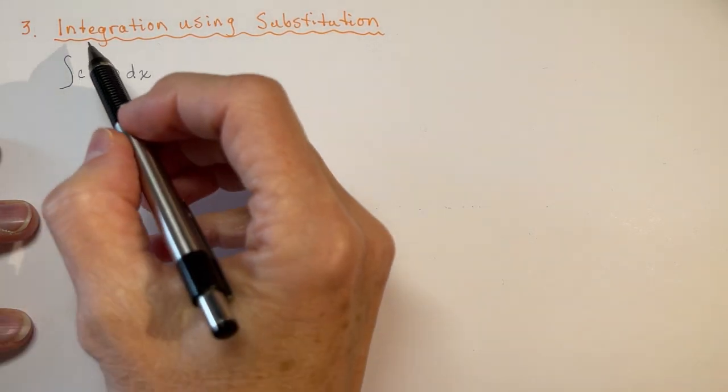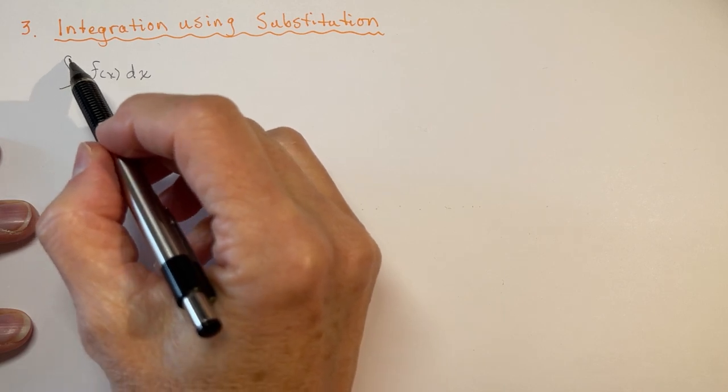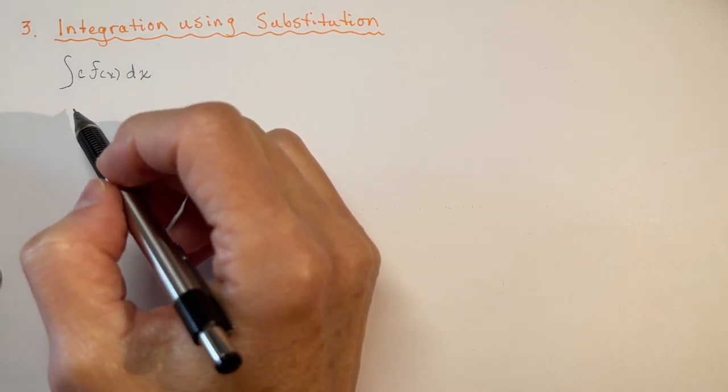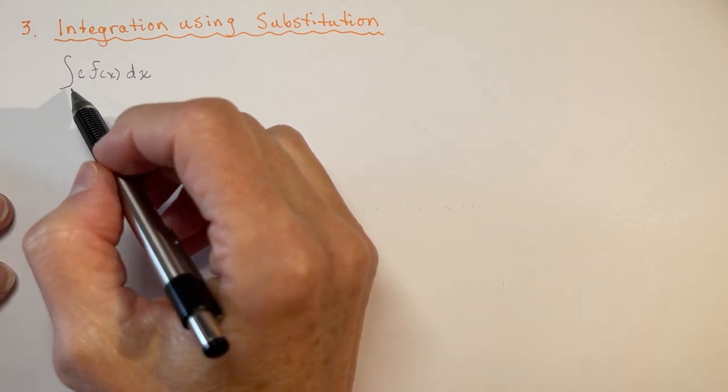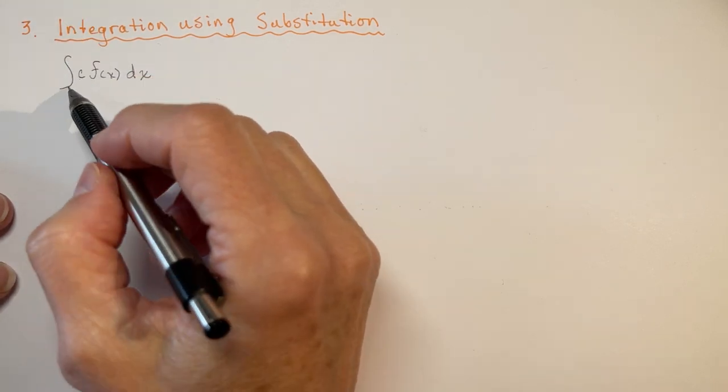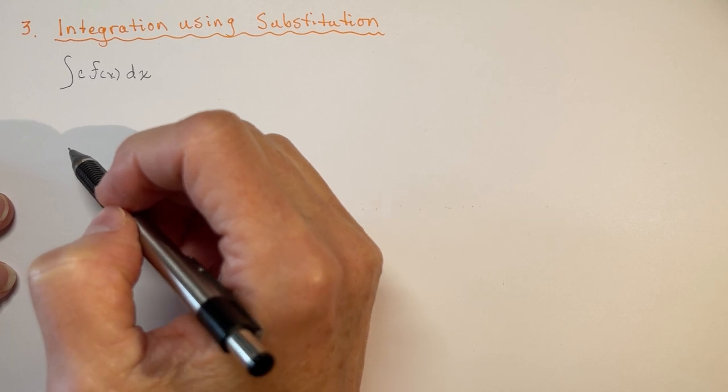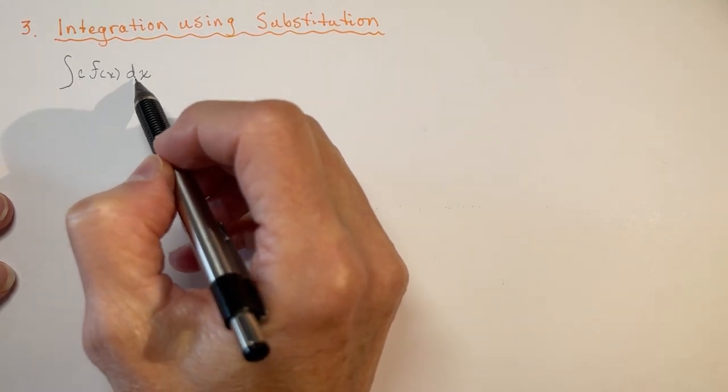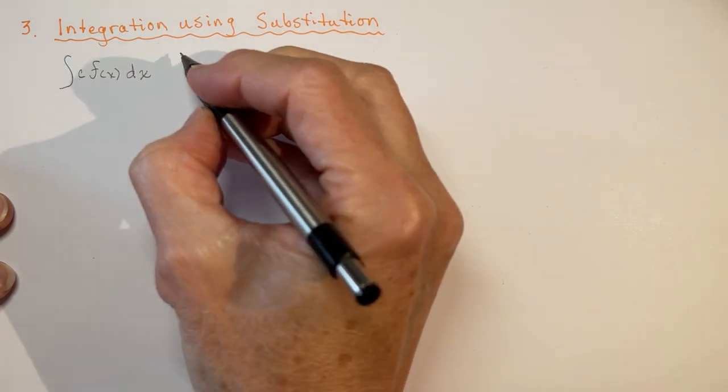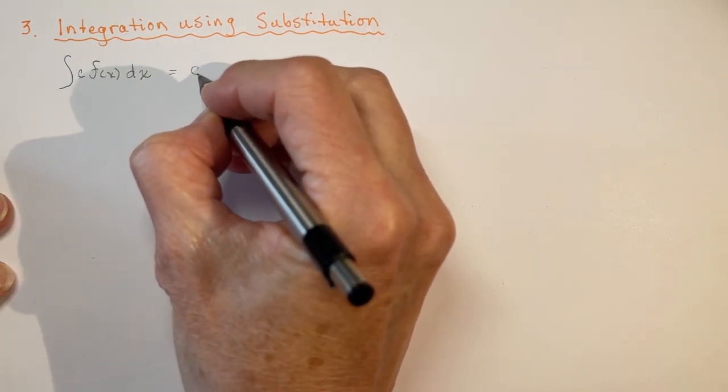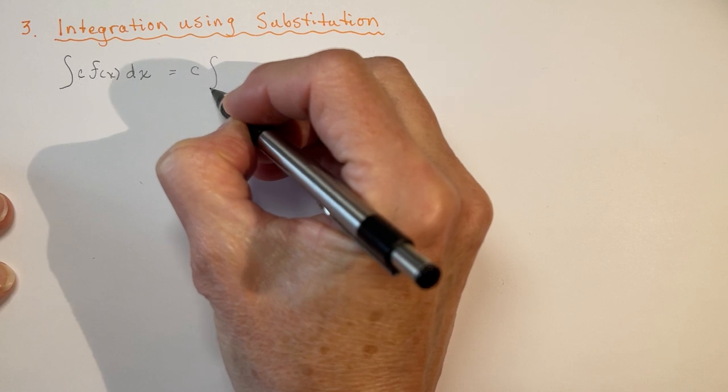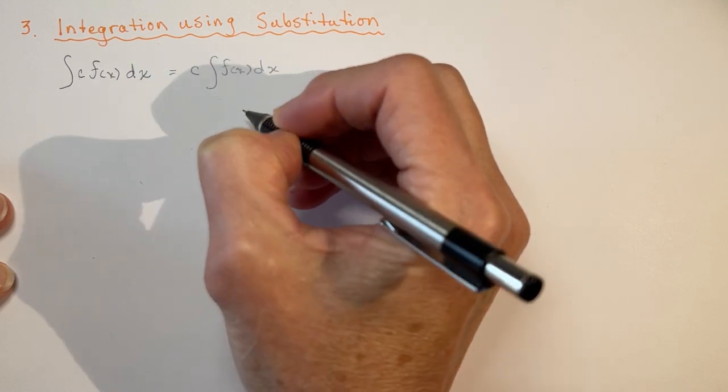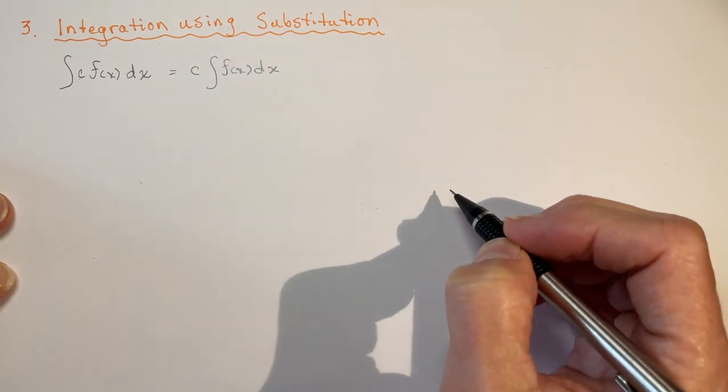So back today we're going to talk about integration. We're going to start using the integration symbol which I haven't used in the previous lessons on antiderivatives. What you do need to know is that the integration of a constant times a function with respect to x is equal to the constant times the integral of the function with respect to x. So that's going to come up in our substitution lesson today.